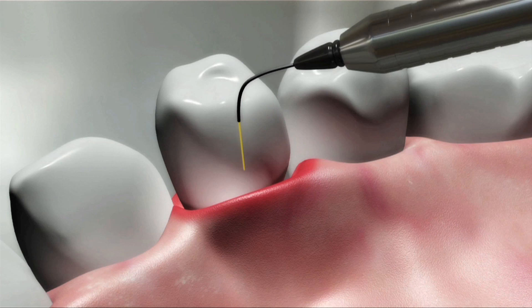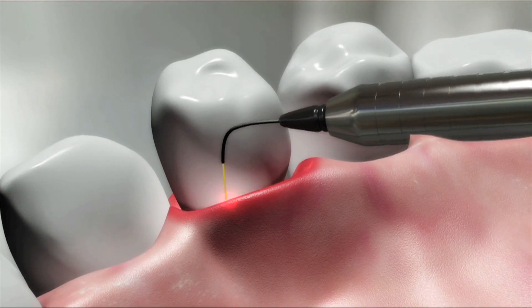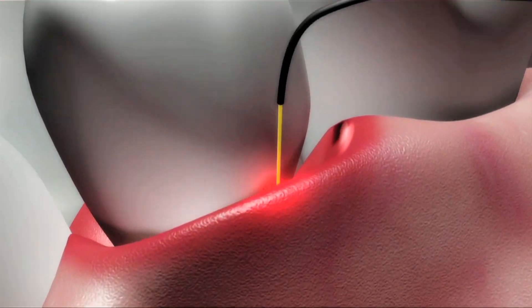After completing a gross debridement of the treatment area, the ND YAG laser is used to remove the diseased epithelial lining to within one millimeter of the bottom of the pocket.